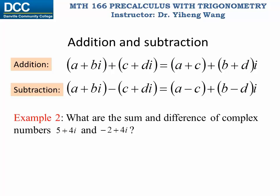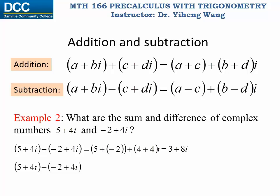For example, to find the sum and difference of five plus four i and negative two plus four i: to find the sum we add the real parts and imaginary parts together, giving three plus eight i. For the difference, five plus four i minus negative two plus four i — subtracting real parts and imaginary parts — gives seven plus zero i, which is simply the real number seven.